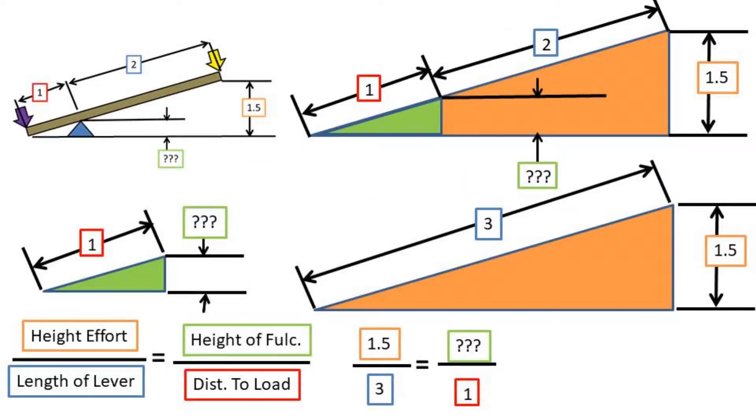Once again we use the rule of similar triangles and we take the height at the effort end and divide by the total length of the lever. We then set this equal to the height of the fulcrum over the distance from the load to the fulcrum. After rearranging the formula we get 0.5 meters for the height of the fulcrum.